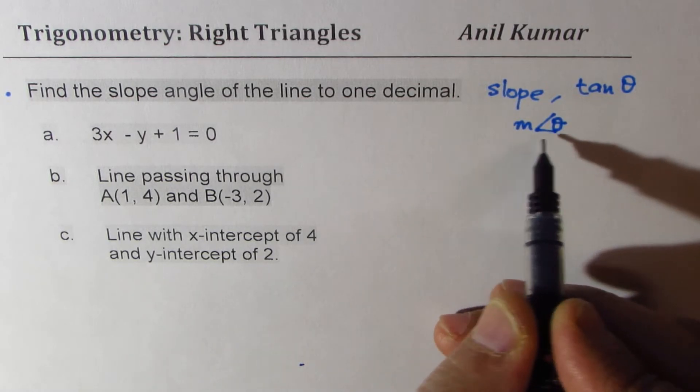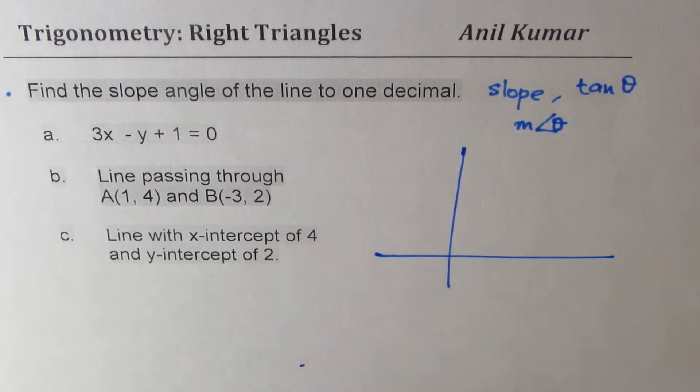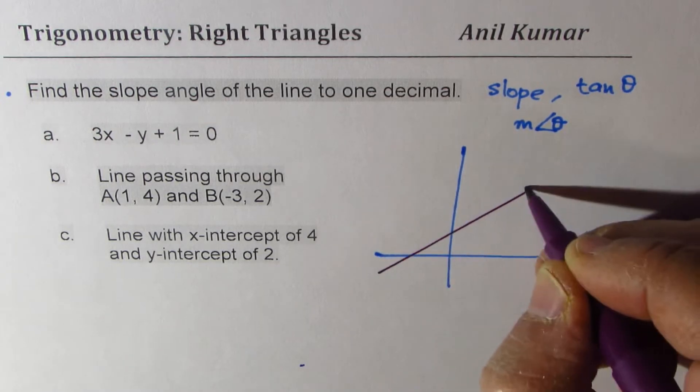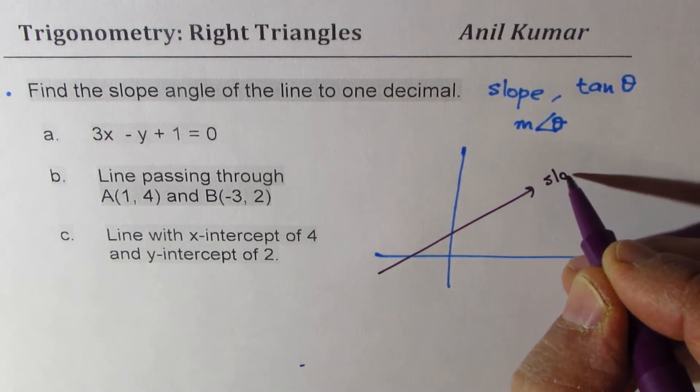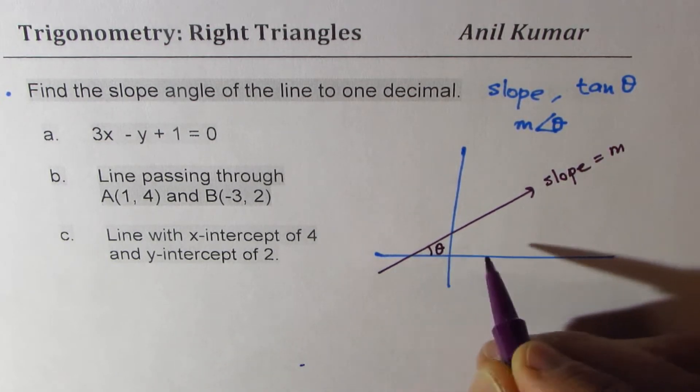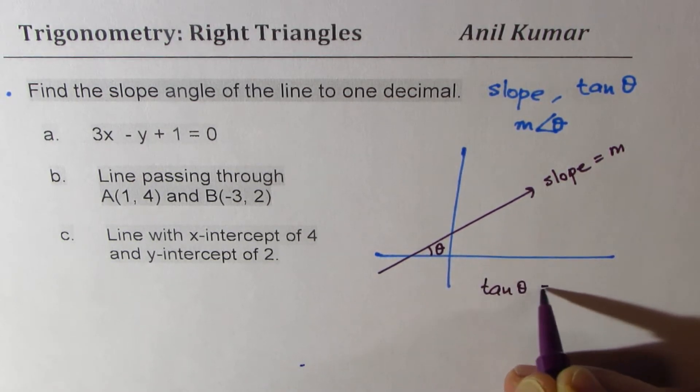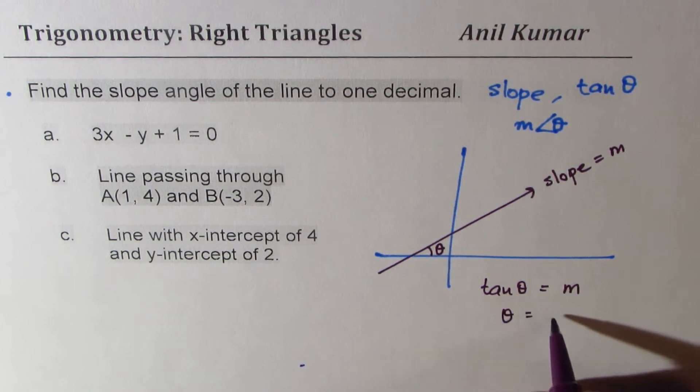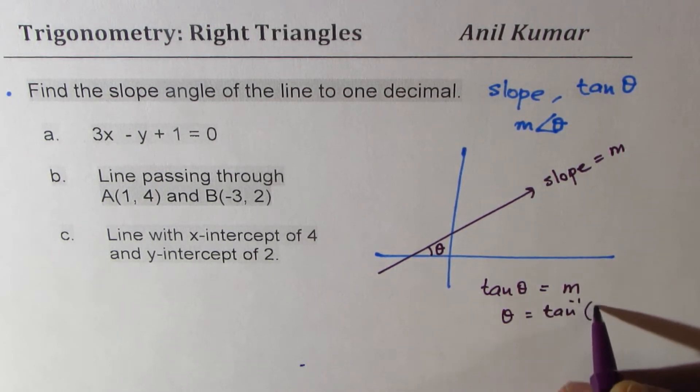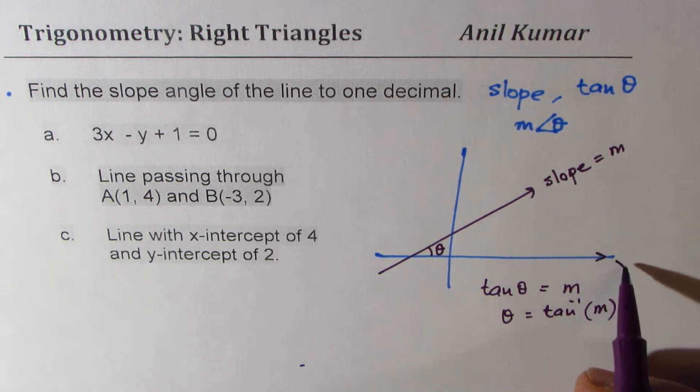Whenever we find this slope angle, we are trying to say that if there is a line where slope equals m, then this angle theta is related with m. We know that tan theta is equal to m, and therefore theta is tan inverse of m. So that is the angle which we are looking for. This angle is always with the positive x-axis.